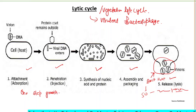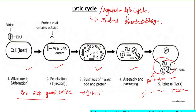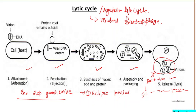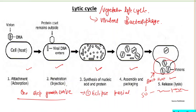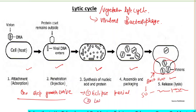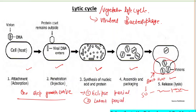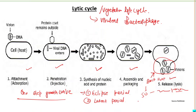The eclipse period is the time during which no virion can be detected inside the cell in the intracellular space. At the end of the eclipse period, mature phages begin to accumulate in the cell and are released by lysis. The latent period is the time from infection until lysis — during this time no extracellular virion can be detected, while intracellular virions can be detected.